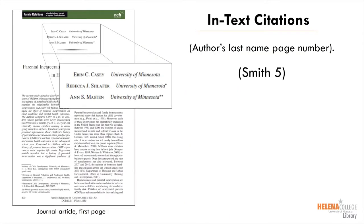When you include information from an outside source in your paper, you must first add an in-text citation to note the source. The in-text citation includes two pieces of information: the author's last name and the page number for the information. Let's look at an example.